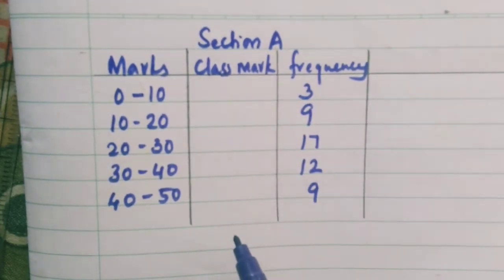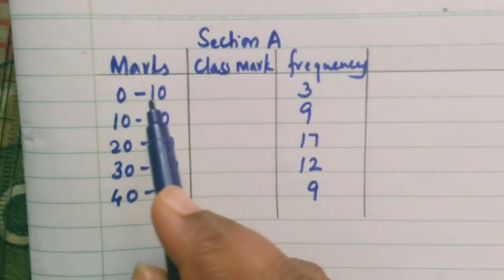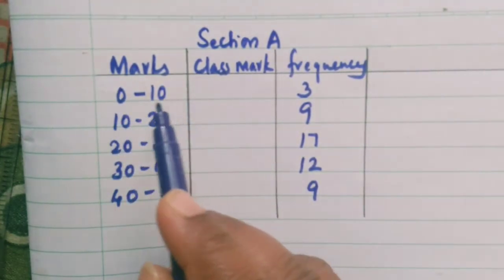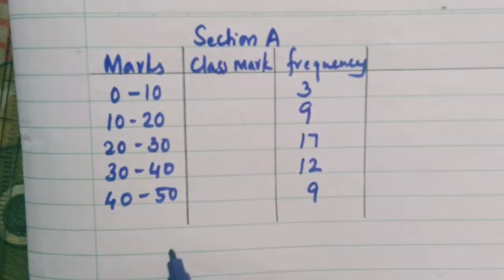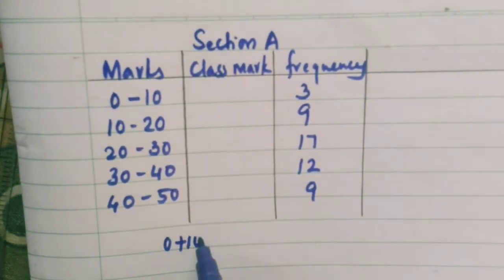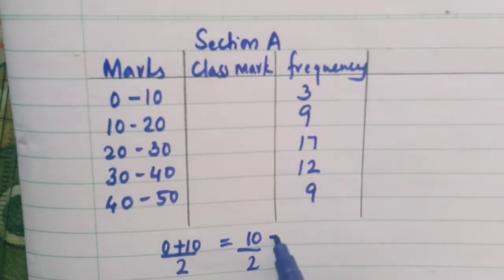Class mark is nothing but the mid value of the class interval. Now you can see 0 to 10. What you need to do is you have to add these two and divide it by 2. That is 0 plus 10 divided by 2 which is equal to 10 by 2, that is equal to 5.